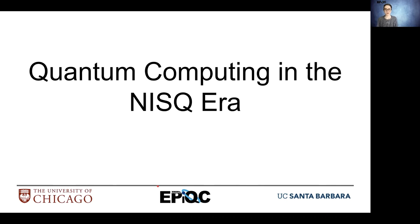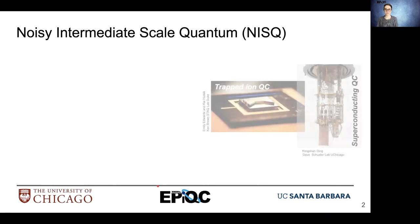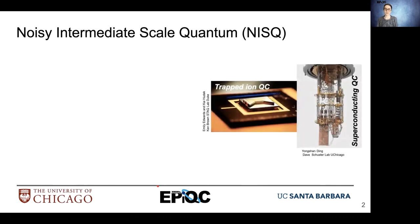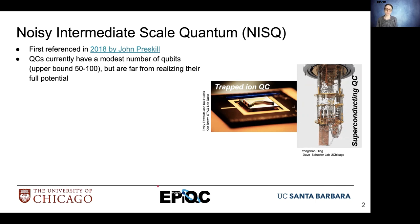Quantum computing in the NISQ era. Noisy intermediate scale quantum, or NISQ — what does this mean exactly? The term was first coined in 2018 by John Preskill and it references the current state of quantum hardware. We're working with about 50 to 100 qubits maximum on devices, and example devices include trapped ion devices and superconducting devices.